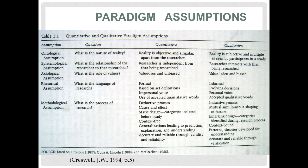Let's look into this table discussing the differences between quantitative and qualitative paradigm assumptions. From the ontological assumptions — ontology means the nature of being, what is the nature of reality — for quantitative, reality is objective and singular, apart from the researcher. In qualitative, reality is subjective and multiple as seen by the participants in the study, in which the researcher can gather information based on subjectivity and can interpret the research.